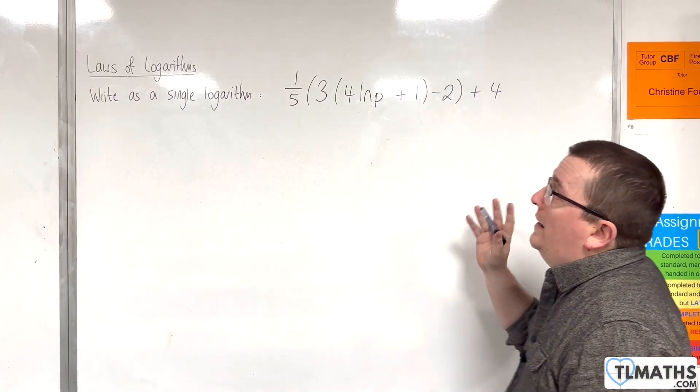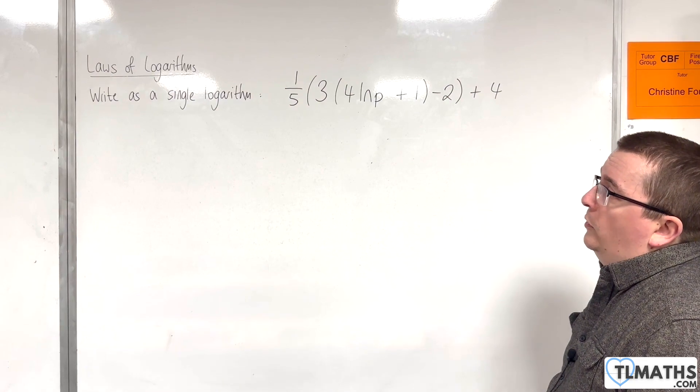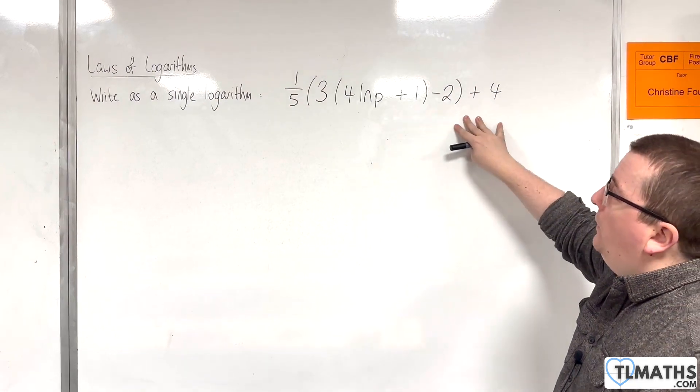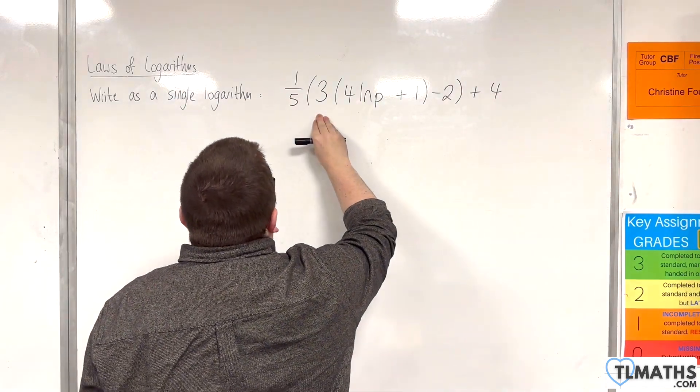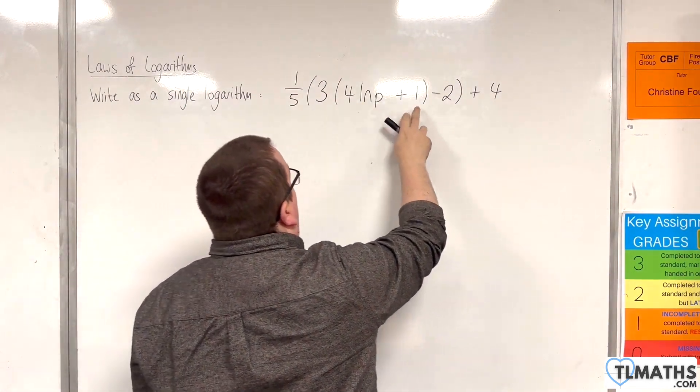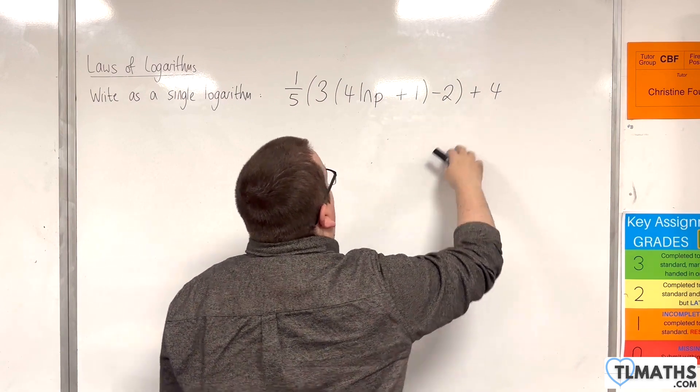In this video I want to go through a slightly more challenging example where I need to write this as a single logarithm. We have 1/5 times 3 times 4 natural log of p plus 1, take away 2, plus 4. And of course we need to be careful with our brackets.